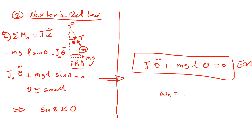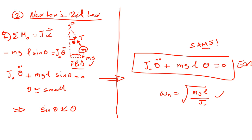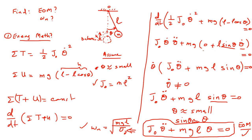The natural frequency is the square root of the coefficient: MGL over J_O. This must be the same as what we got from the energy method, because we are solving the same system — otherwise there is a mistake. And indeed, we get the same result: omega_n equals square root of MGL over J_O.